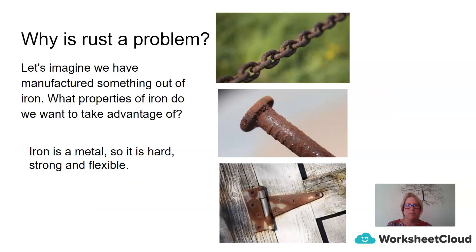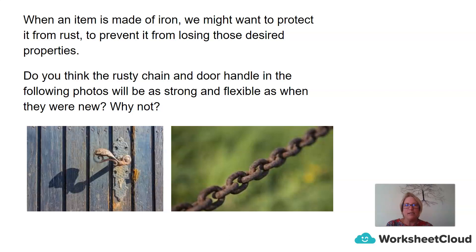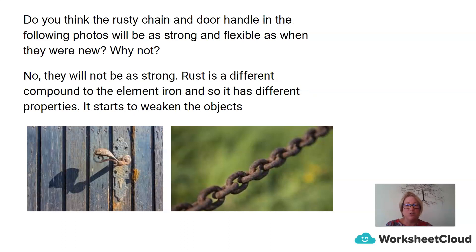So why is rust a problem? Let's imagine we have manufactured something out of iron — a chain, a nail, or a hinge on a door. We have picked iron firstly because it is a metal, it is hard and it is strong. When an item is made of iron, we want to protect it from rust to prevent it from losing those desired properties. Do you think a rusty chain and door handle will be as strong and flexible as when they were new? No — they are not going to be as strong, because rust is a different compound altogether. Rust is not iron; rust is iron oxide, which means it is going to have different properties, and that means it is going to start to weaken.